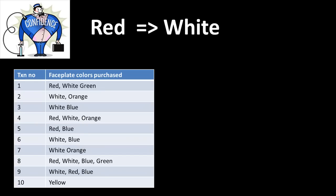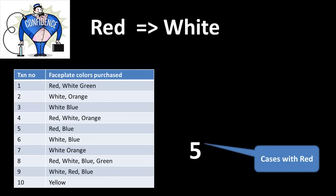So how good is this rule — red implies white? To find out how good a rule is, we want to find the proportion of cases in which the rule is actually satisfied. In other words, of all the cases in which red occurs, what are the cases in which white also occurs? We consider the following ratio: cases in which red occurs — that is 5, specifically row numbers 1, 4, 5, 8, and 9.